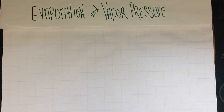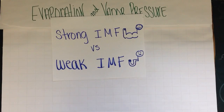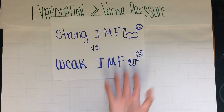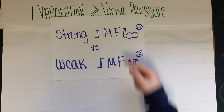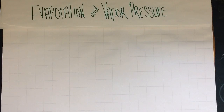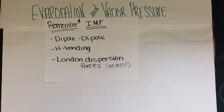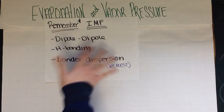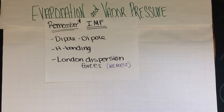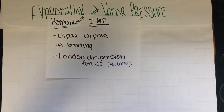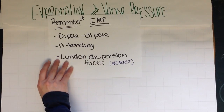Let's go back and remember intermolecular forces. We've talked about strong and weak intermolecular forces in a previous video. Here are the types: dipole-dipole, hydrogen bonding, and London dispersion forces. Remember, hydrogen bonding is a type of dipole-dipole, but it is a very strong type of dipole-dipole, whereas some other dipoles are not as strong. This is probably a good time to stop and review your notes on these three in order to move on with the video if you don't remember them.